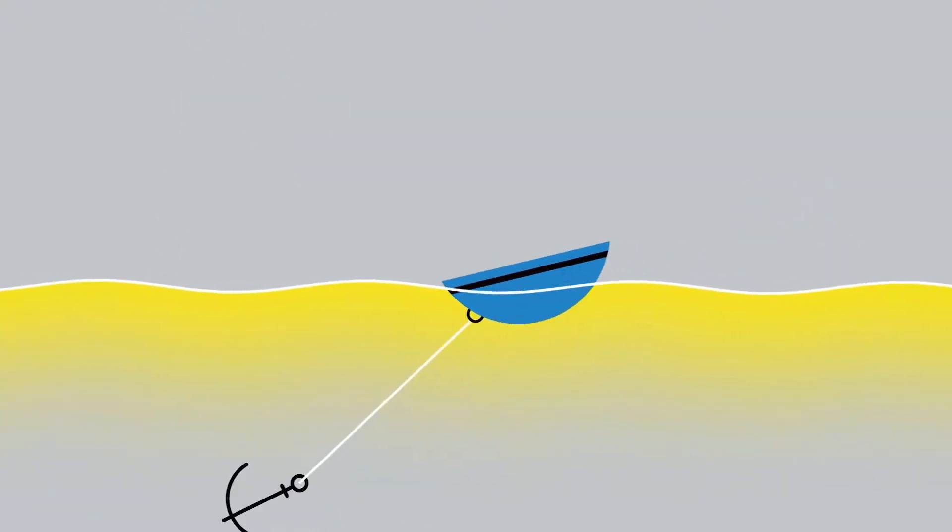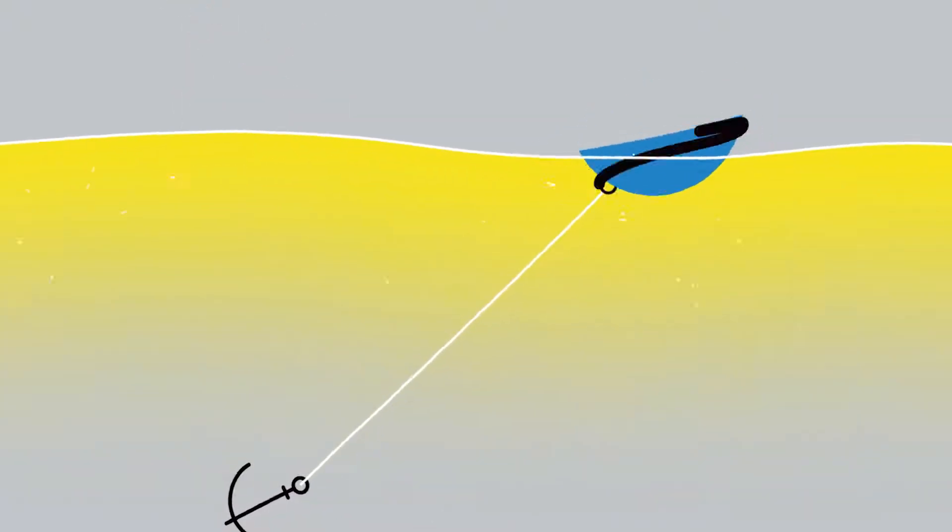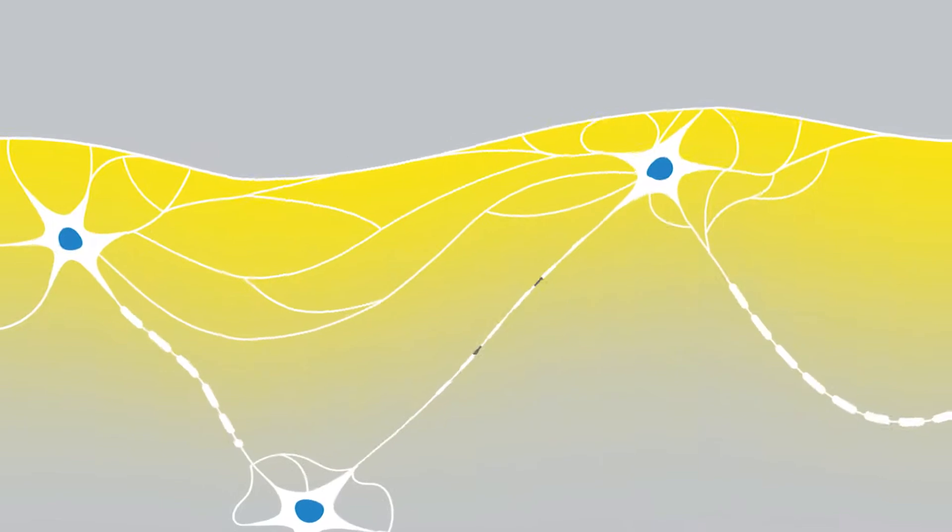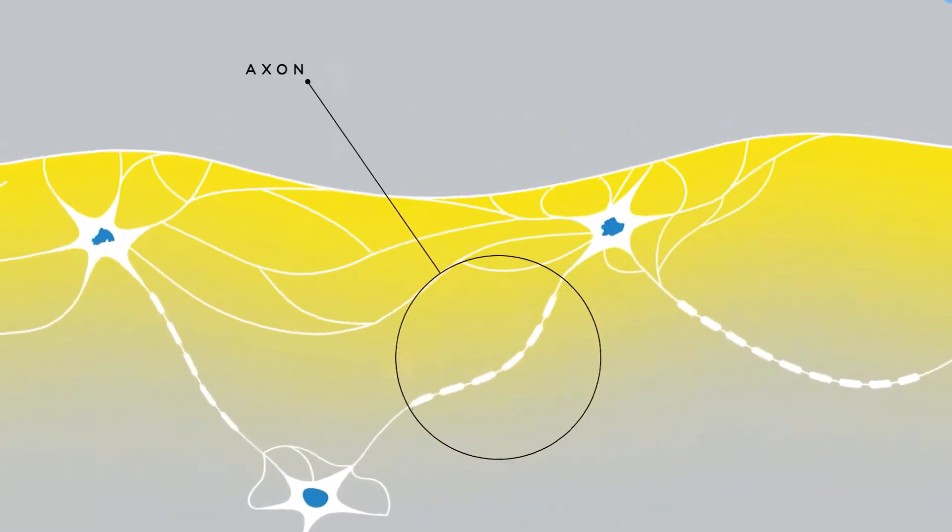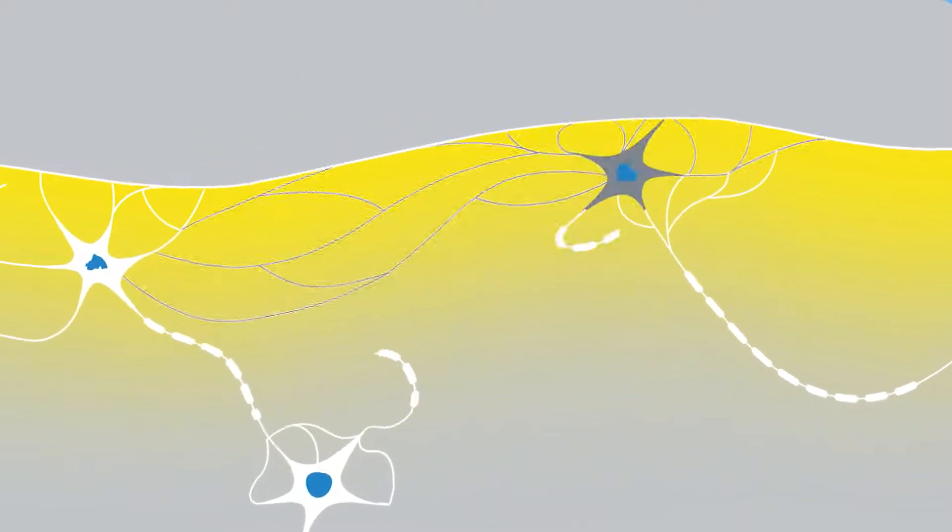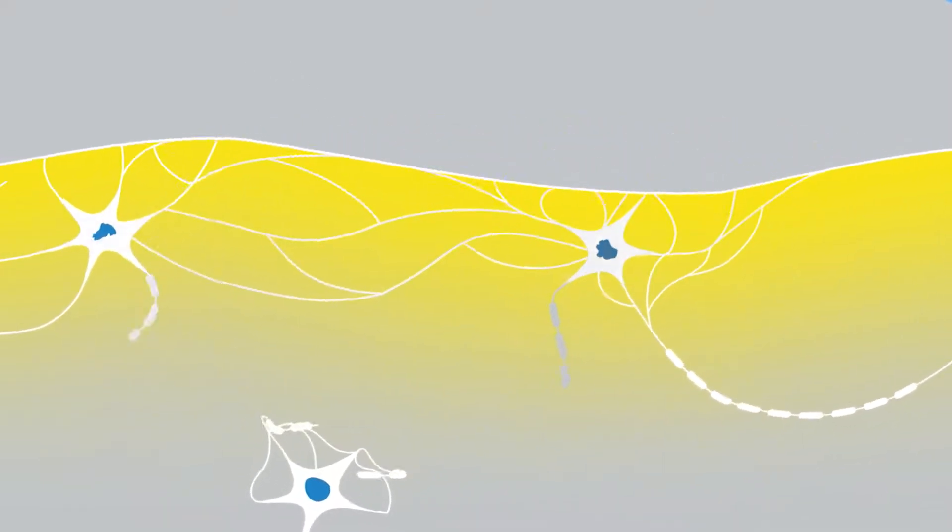The same principle applies to your brain when it's subjected to rotational energy. Some brain tissue is pushed by rotational energy while other brain tissue remains fixed in place. The resulting strain can damage the axons that are critical to healthy brain function.